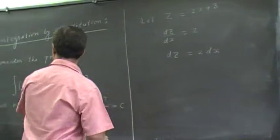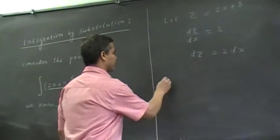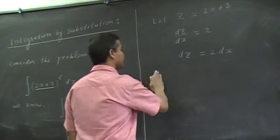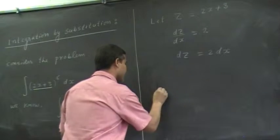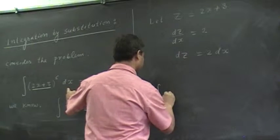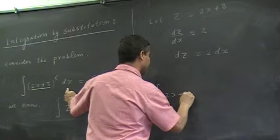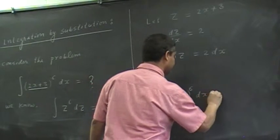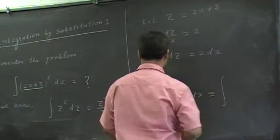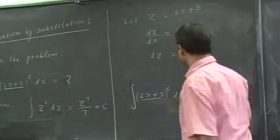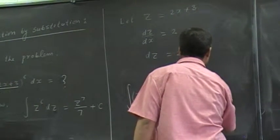Then what is the integral then? This integral would be, let's go there. Maybe keep a little bit of space, because I want to play with this relation later. Then, (2x plus 3) to the 6 dx is, I have it in this quantity to be z, right? z to the 6.